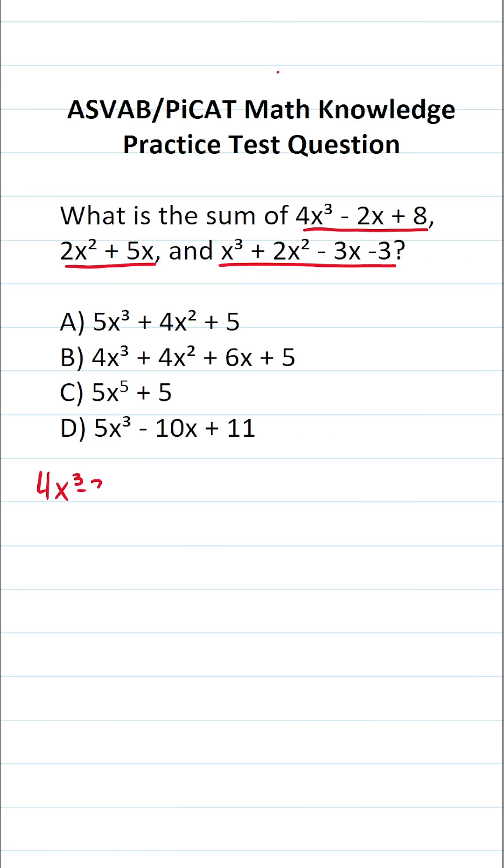We have 4x³ - 2x + 8 + 2x² + 5x + x³ + 2x² - 3x - 3. All right, so we just added our three polynomials together.